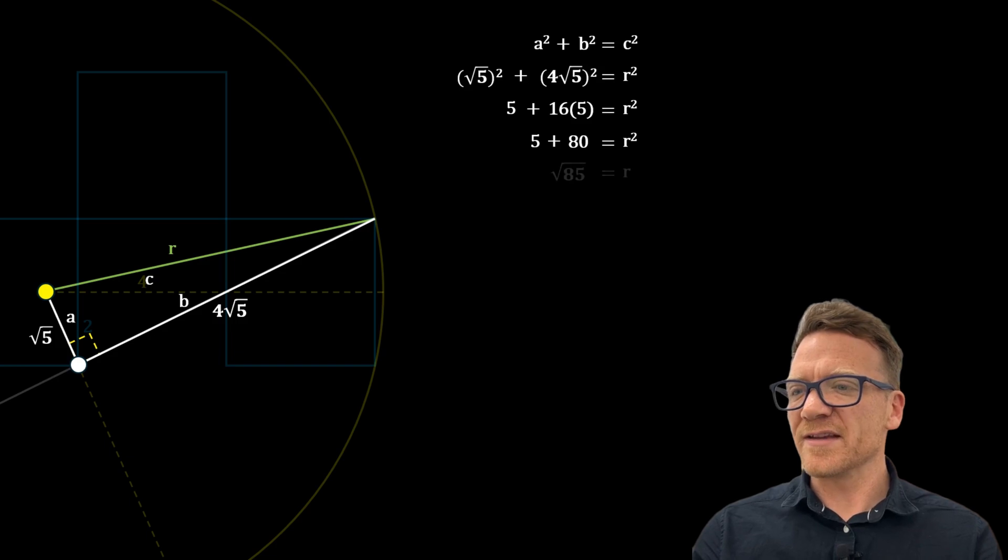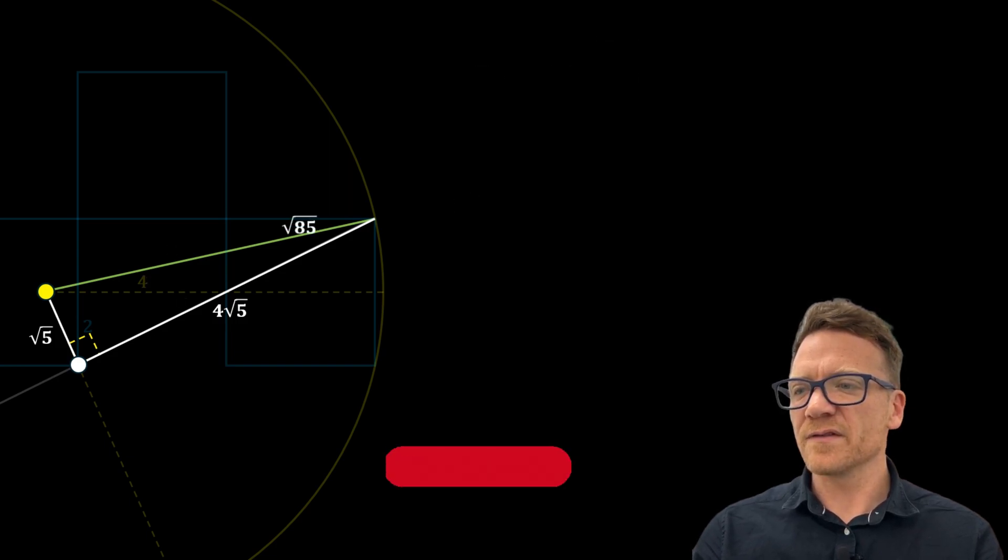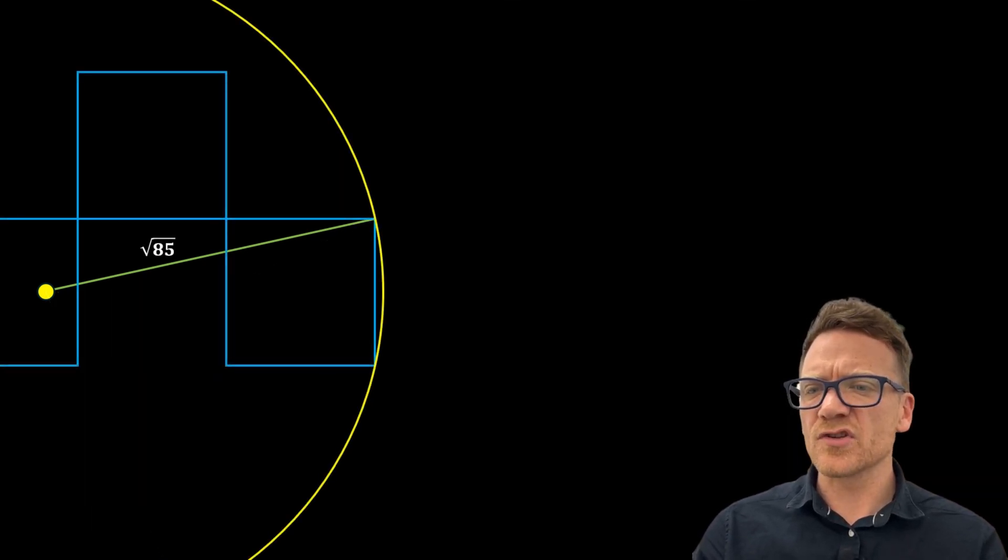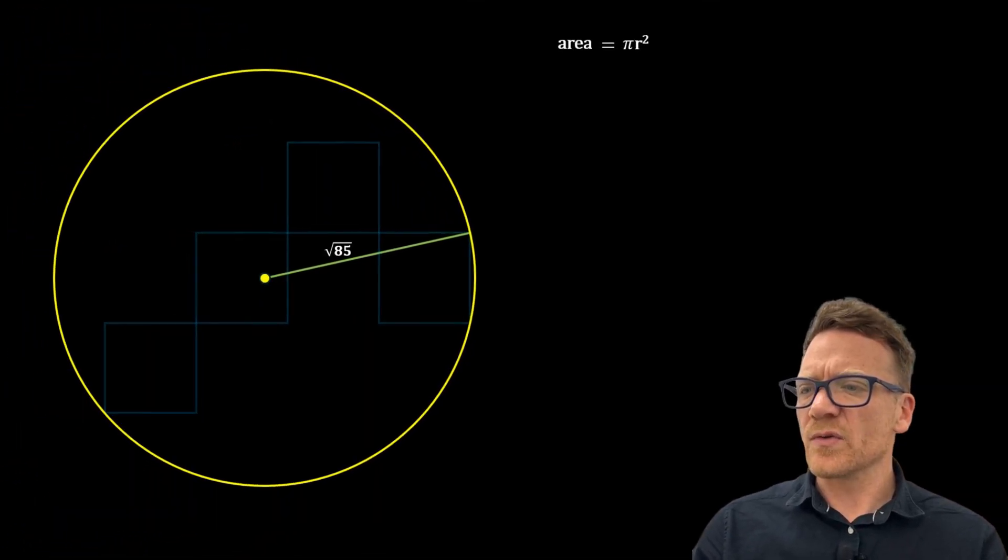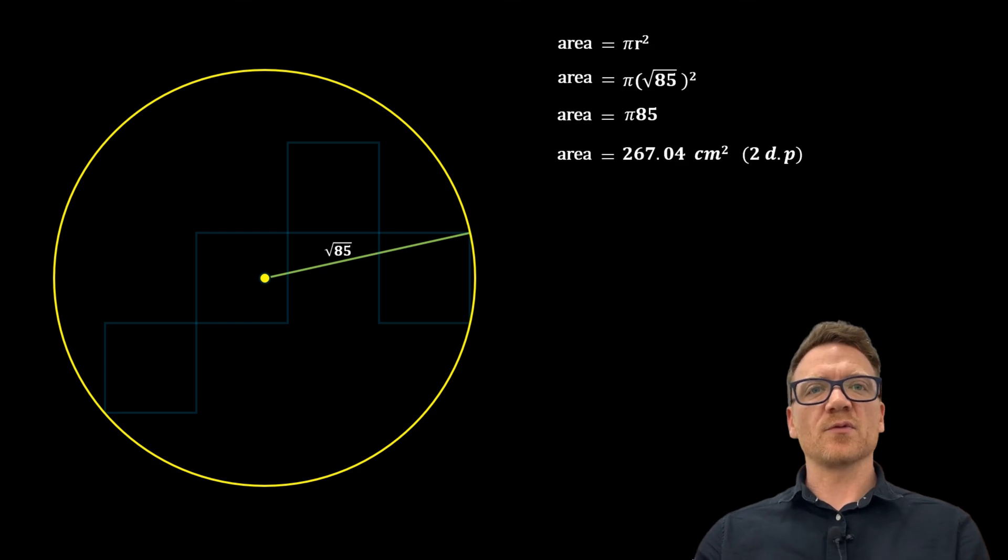So to get the radius, take the square root of both sides, so the radius is square root of eighty-five. And now that we have the radius, we can go ahead and work out the area of the circle, which is pi r squared. So that becomes pi times eighty-five, which is two hundred and sixty-seven point zero four centimeters squared, and that's to two decimal points.